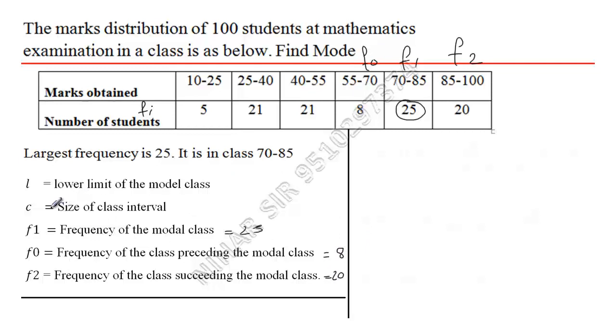C stands for class length. Class length is the difference of upper limit and lower limit: 25 minus 10, that is 15. And l is the lower limit of the modal class. This is my modal class: lower limit is 70 and upper limit is 85. So l is 70.